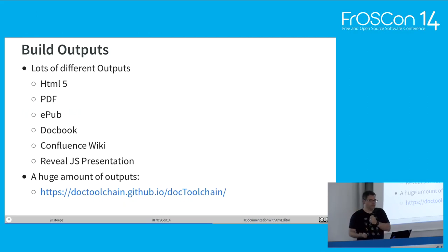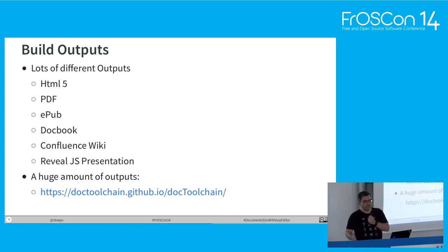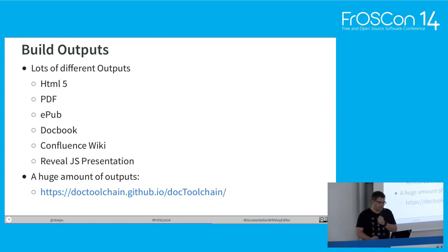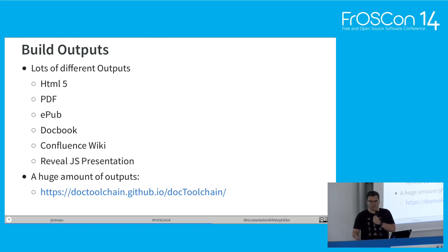What outputs can we build from AsciiDoctor source? It's a lot: mainly HTML5, PDF, EPUB, DocBook, Confluence wiki — so you can write directly from your CI/CD pipeline into a Confluence wiki — and we can create presentation files like this one, which is a Reveal.js presentation where the source was AsciiDoc. When you need more, like converting to an office document, you can always use Pandoc to create nearly everything — from Markdown to AsciiDoc, from AsciiDoc to Microsoft something and so on.